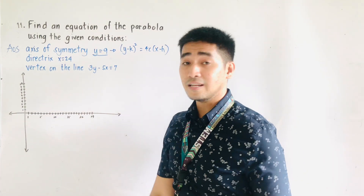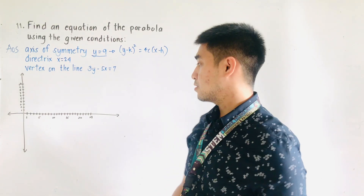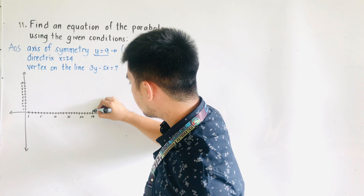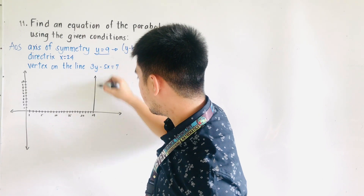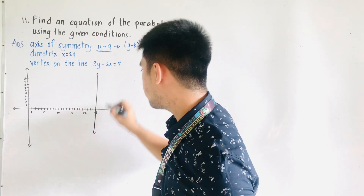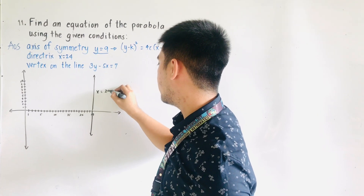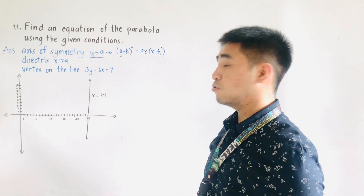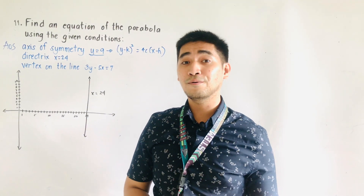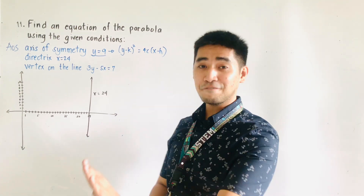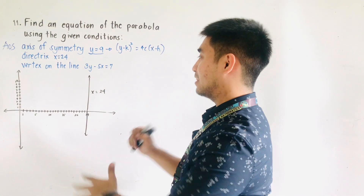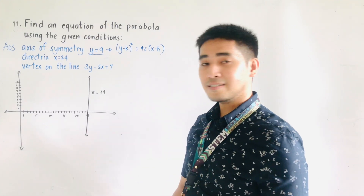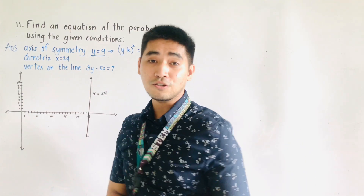The next condition is directrix x is equal to 24. Our directrix is vertical. Since our directrix is x equals 24, our parabola will either open to the left or to the right. Since we do not know yet the vertex, we are done using the second condition.